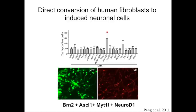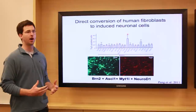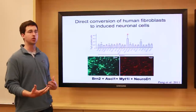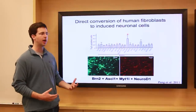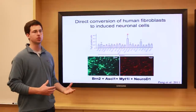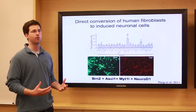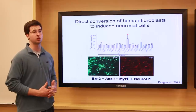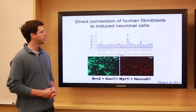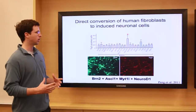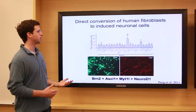All those studies were done with mouse cells. An obvious question was: can we do the same thing with human cells, which would be really important for actual disease modeling? We started with mouse because of the available experimental tools — it's much more straightforward as a starting point. After showing we can do it in mouse, we moved on to human cells.